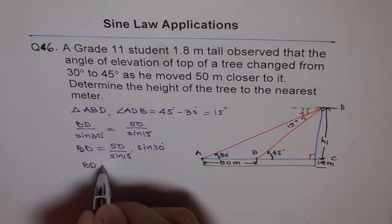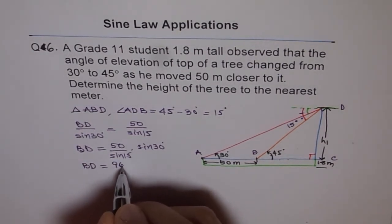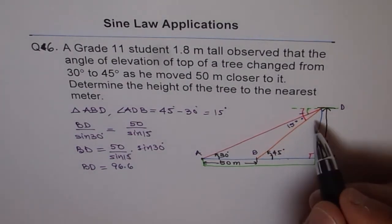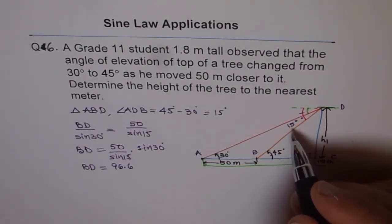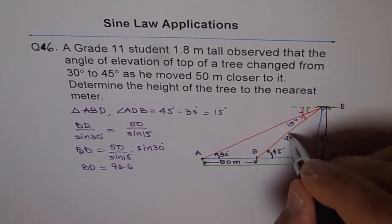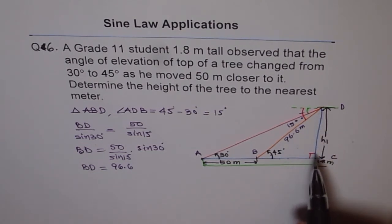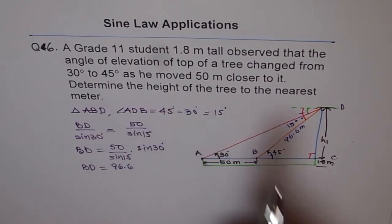So we get BD equals to 96.6 for the time being. So we got BD as 96.6. So let me write 96.6 meters here. Now once we know that, then we can find the height. Determine the height of the tree.